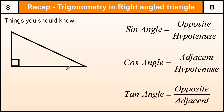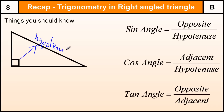Things we should know about a right angle triangle when using trigonometry: first, how do we label the sides? We need to know those so we can use the three ratios — the three equations that are the basis of trigonometry in a right angle triangle. We start with the hypotenuse, which is the side opposite the right angle and is the longest side of any right angle triangle. The other two sides, the opposite and the adjacent, depend on what angle we are using.